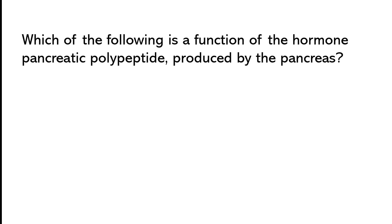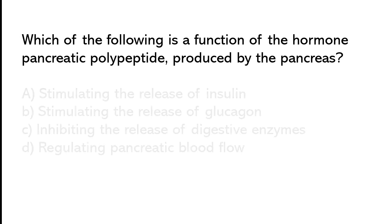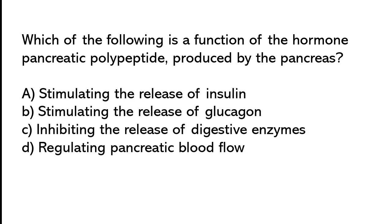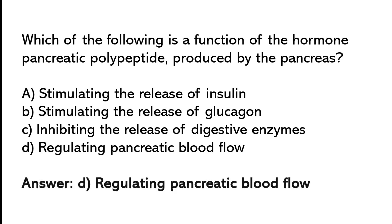Which of the following is the function of the hormone produced by the pancreas? Stimulating the release of insulin, stimulating the release of glucagon, inhibiting the release of digestive enzymes, or regulating pancreatic blood flow. The correct answer is option D — regulating pancreatic blood flow.